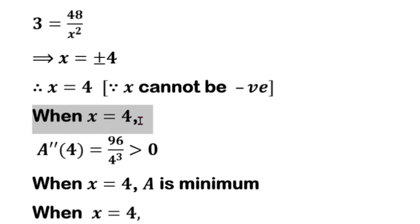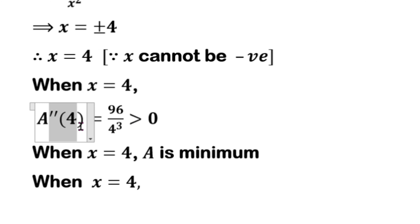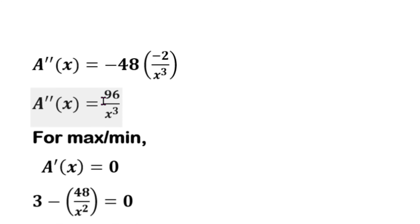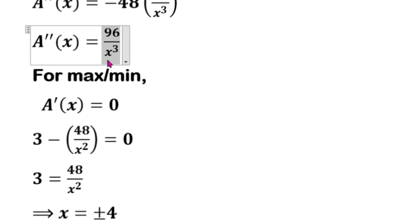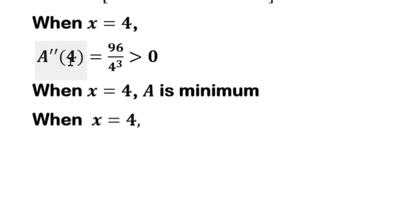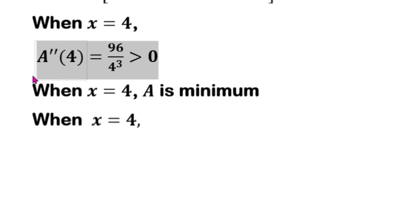When x equals 4, we evaluate the second derivative. A''(x) equals 96 by x cubed. At x equals 4, the denominator 4 cubed is positive and the numerator is positive, so A''(4) is positive. Since the second derivative is positive, the area is minimum at x equals 4.